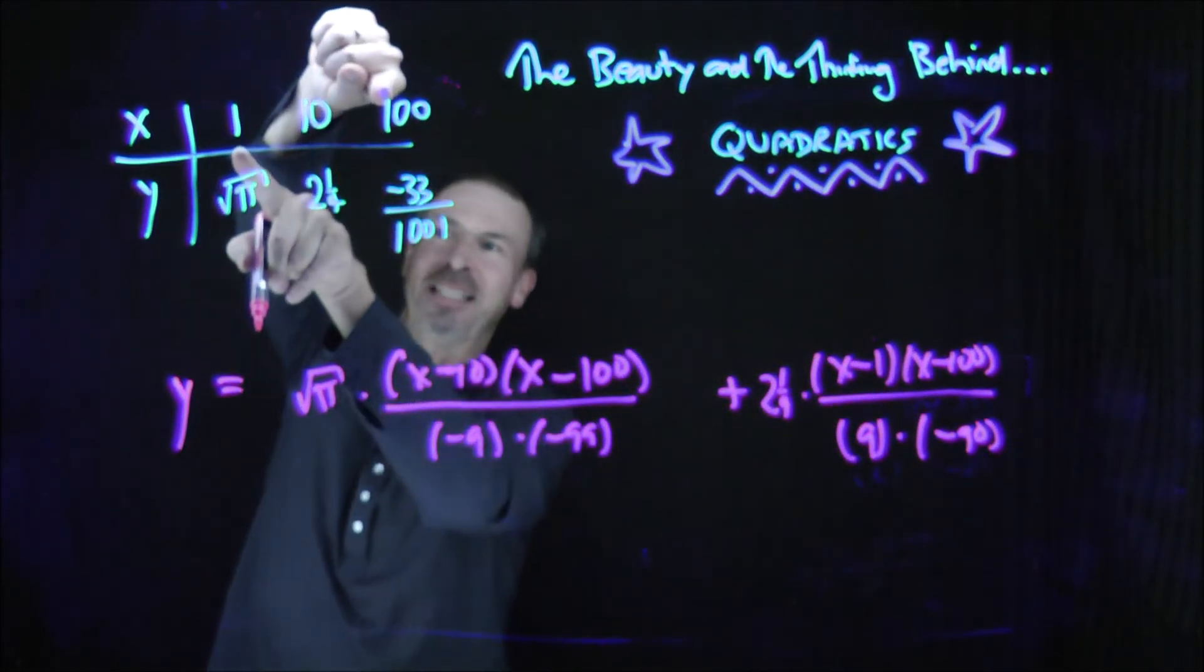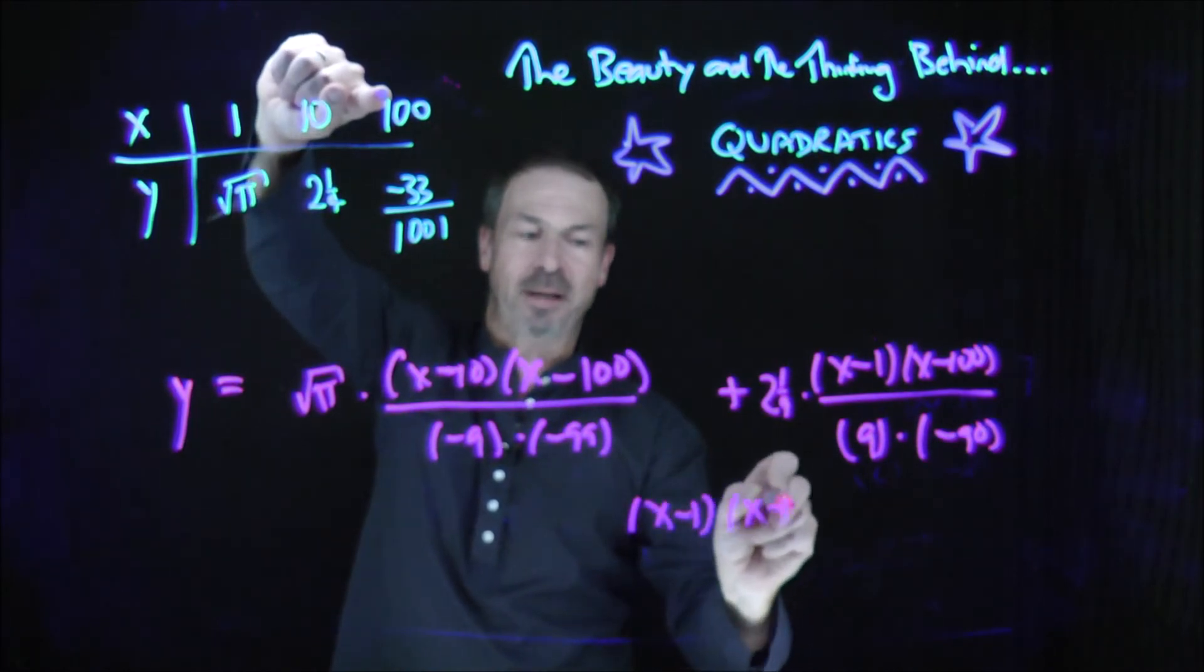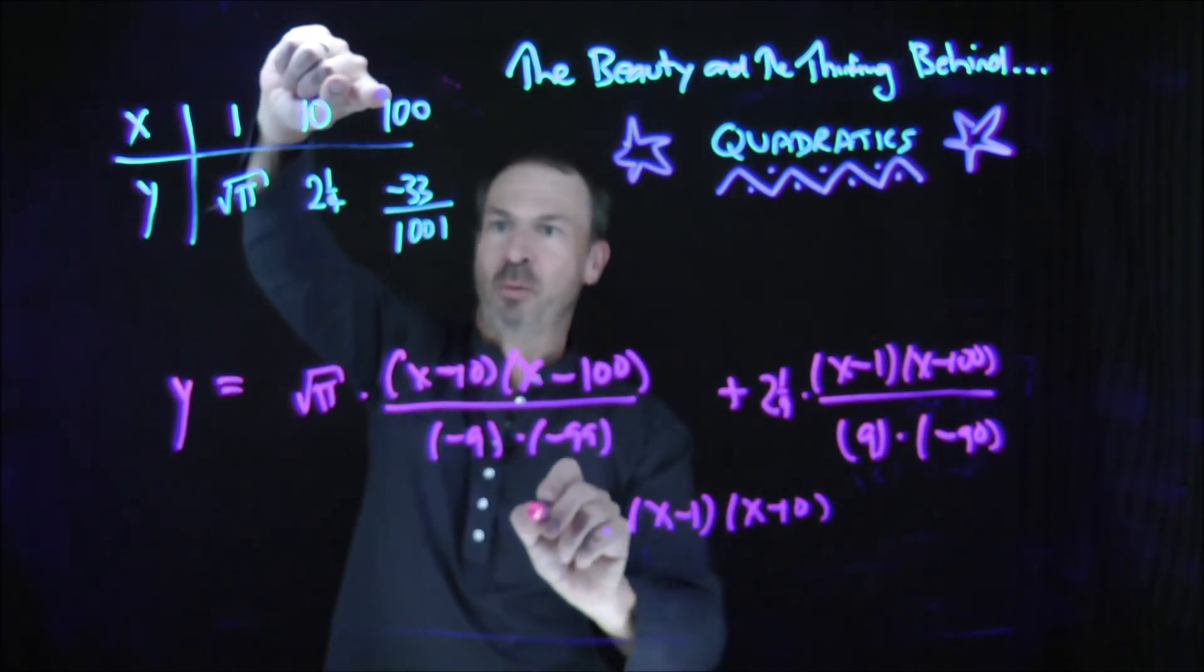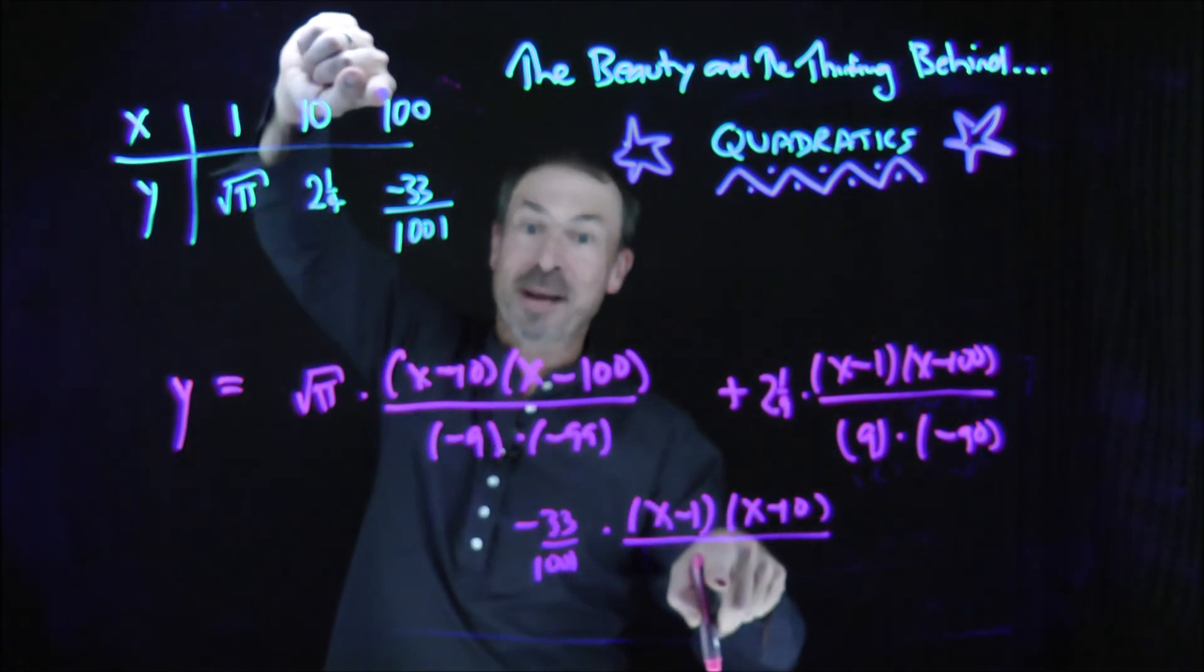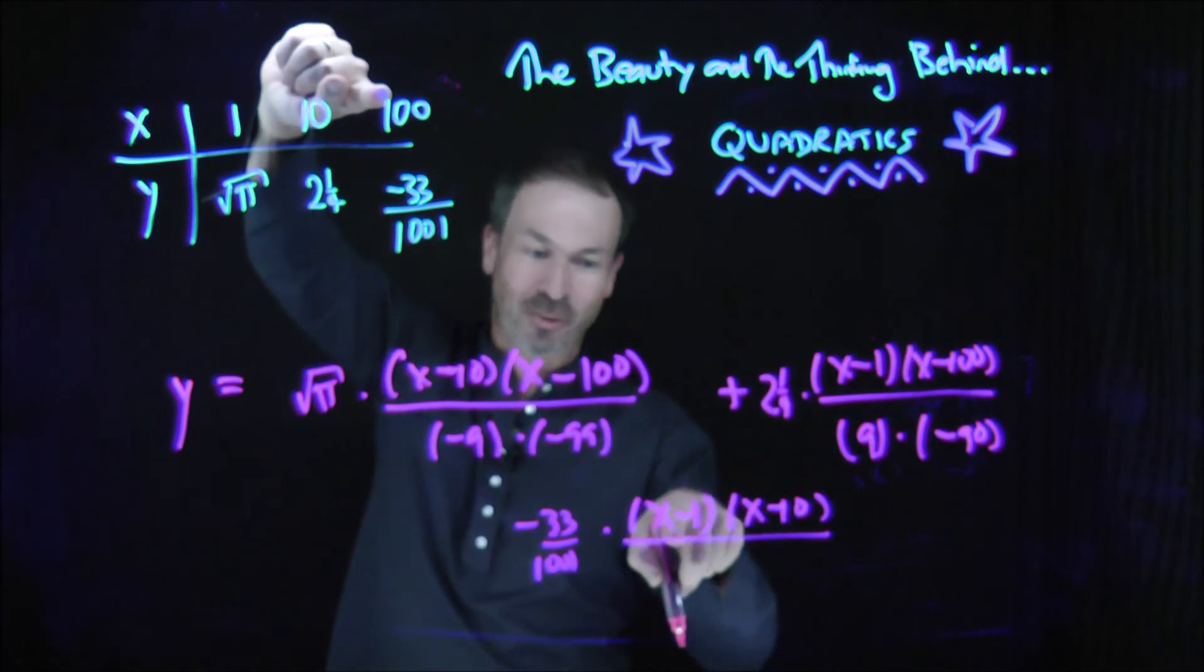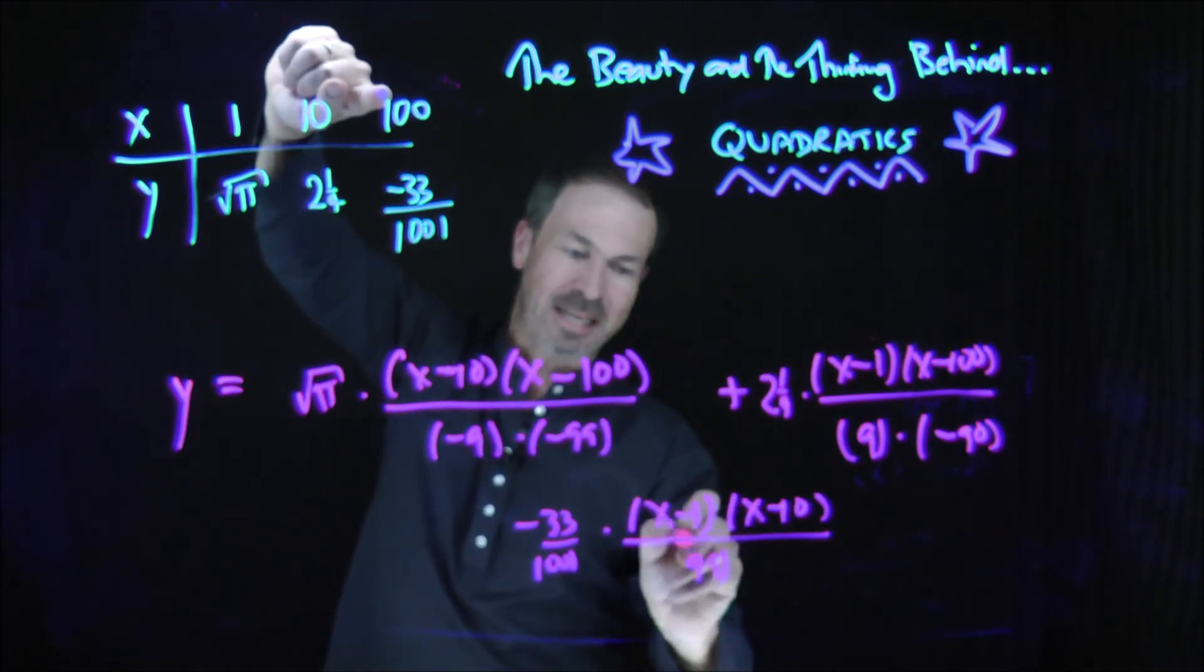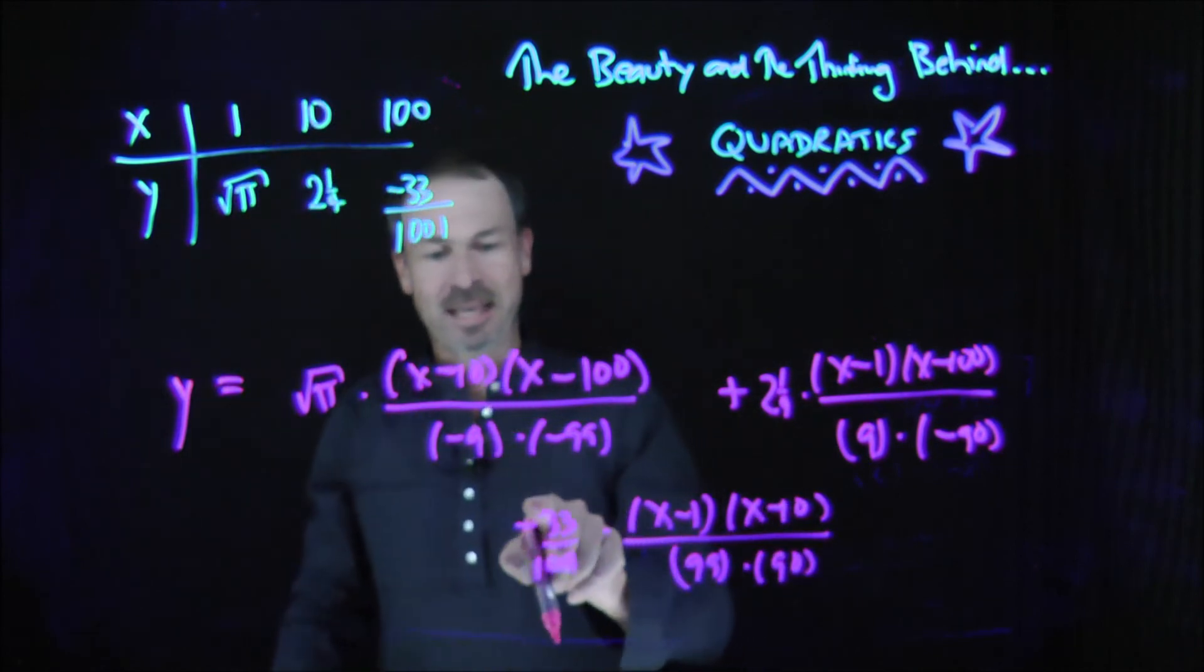And I probably want a negative 33 and 1,000 once in front. But I want a denominator now to counteract the numerator when x actually is 100. So when x is 100, I want a 99 down there and I also want a 90 there. And I think that's it.